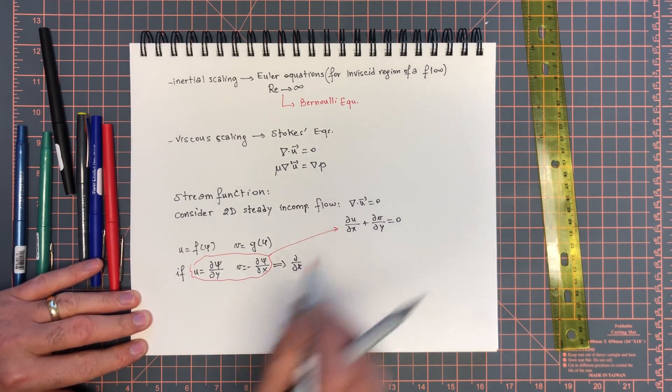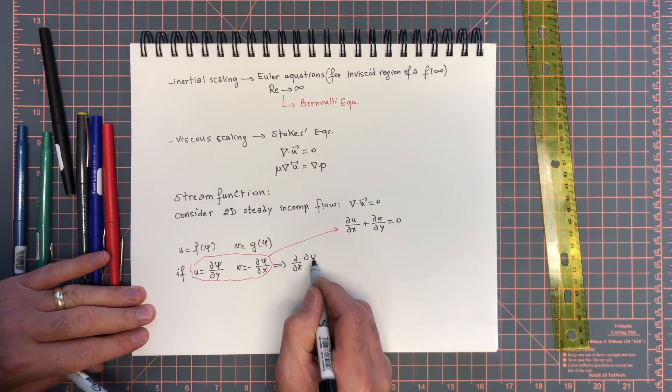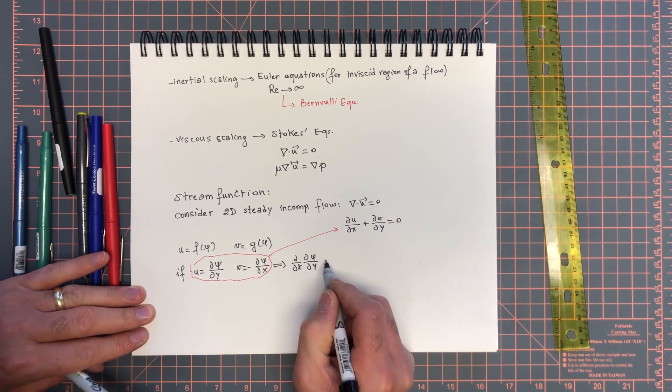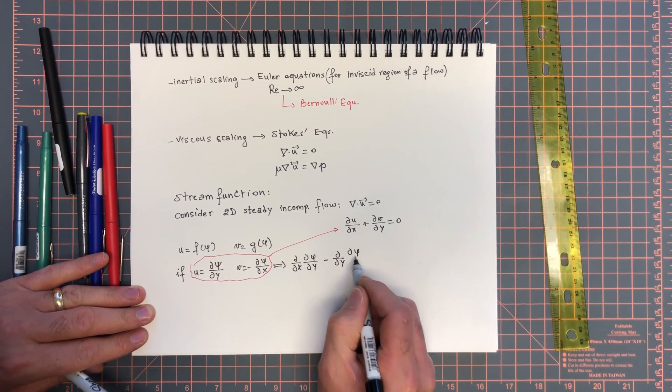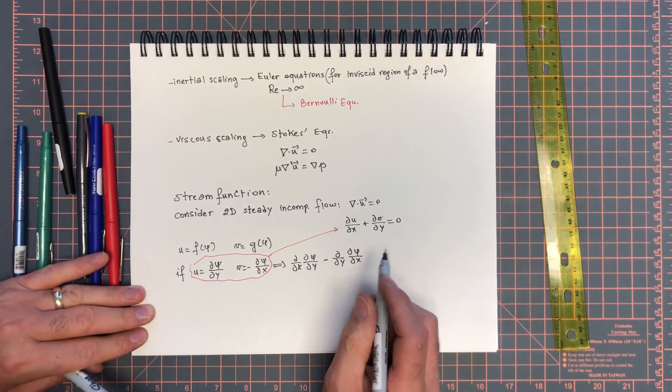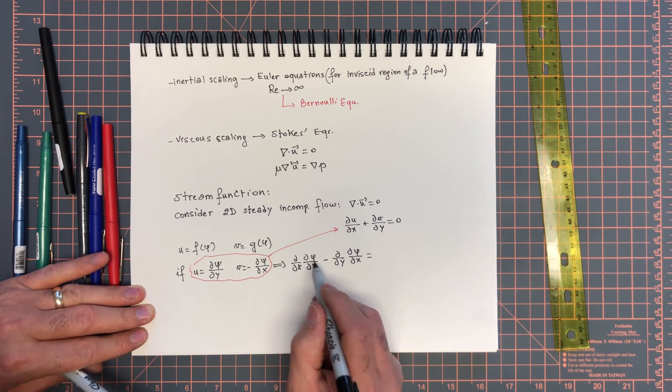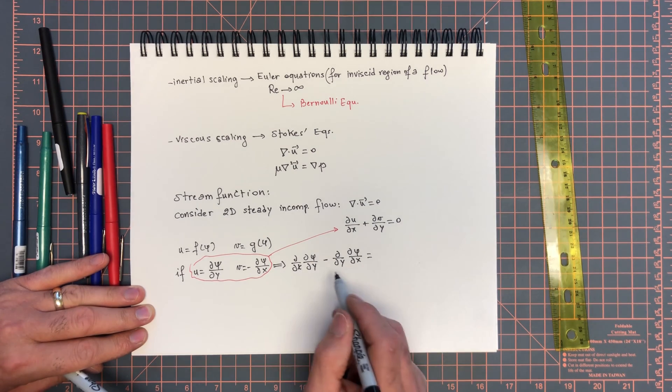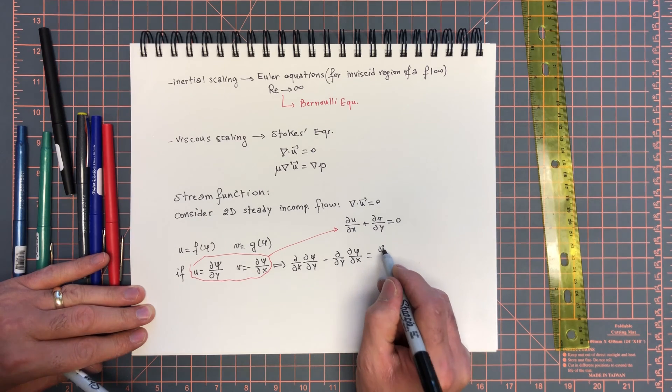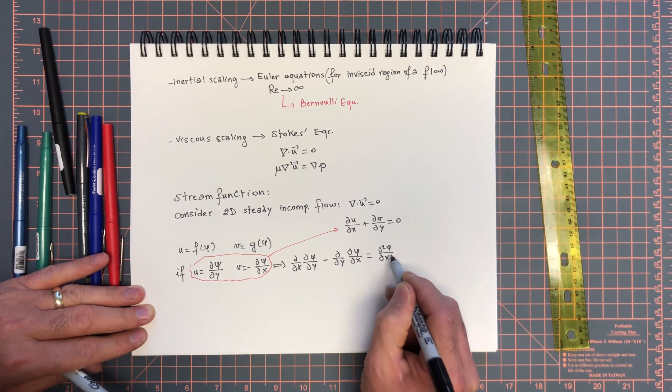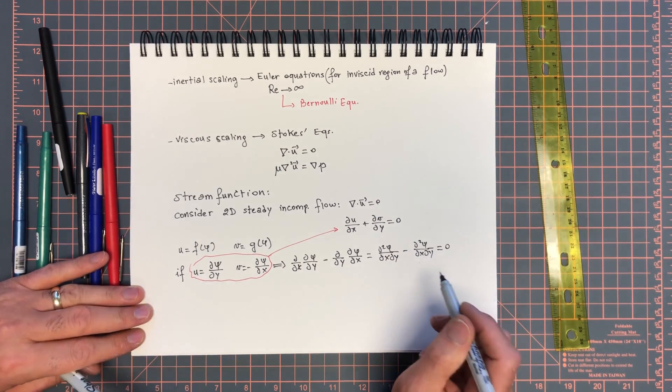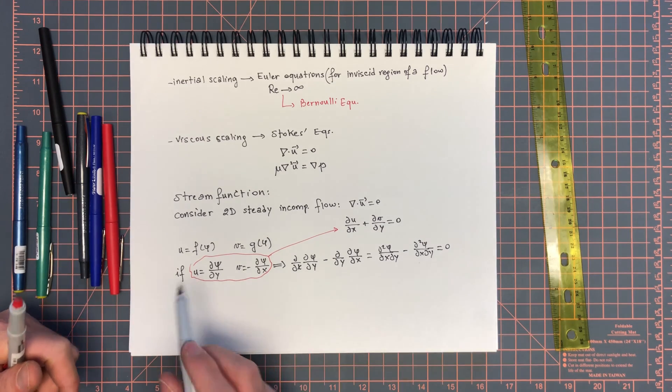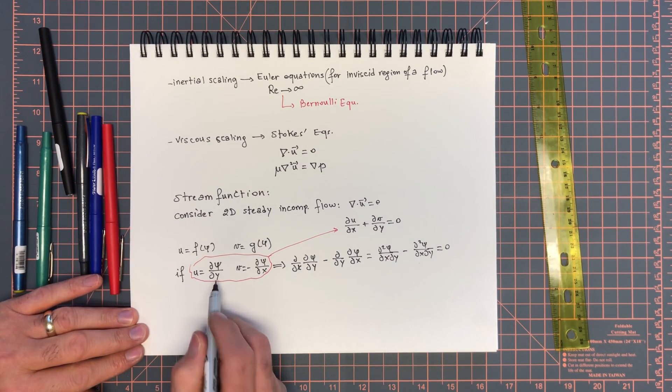If we substitute these into the continuity equation, we get d/dx(dψ/dy) minus d/dy(dψ/dx) equals zero. Because ψ is continuous we can swap derivatives, and then we get d²ψ/dxdy minus d²ψ/dxdy, and that equals zero.